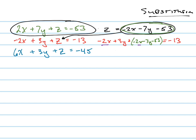Adding these together I get negative four x. Adding these together I get negative four y. Moving the constant, negative fifty-three equals negative thirteen. Now I'm going to solve this one for y — I could choose x or y, it doesn't matter, but I'm going to solve it for y. So that means I'm going to add fifty-three.